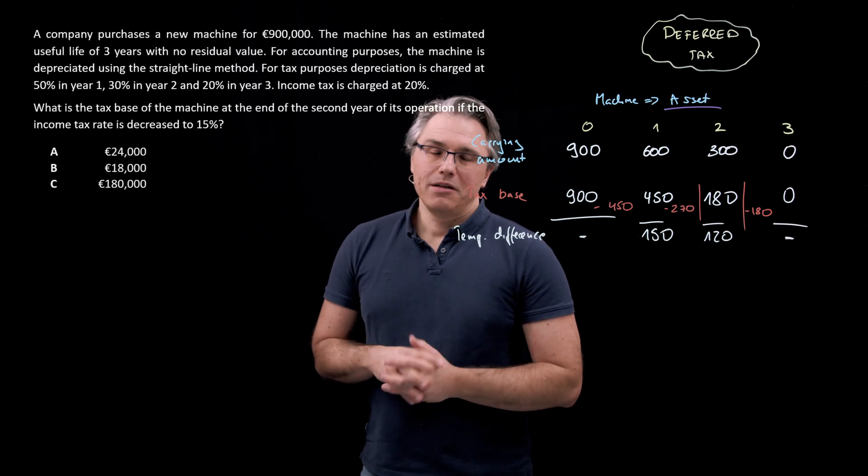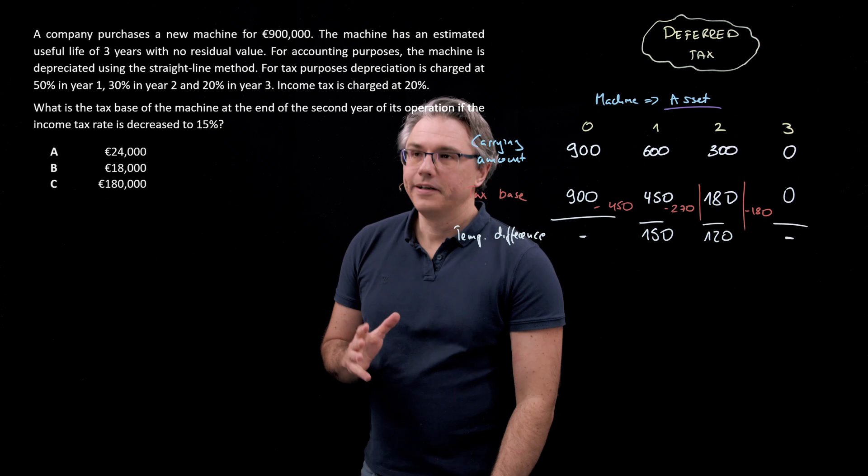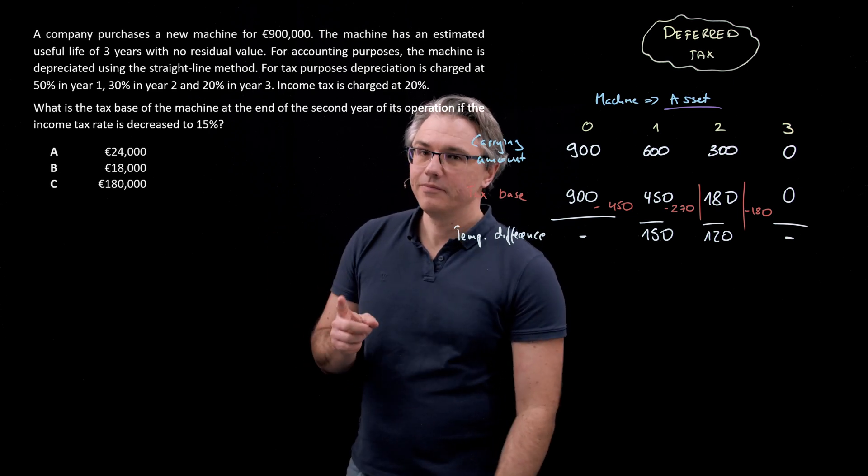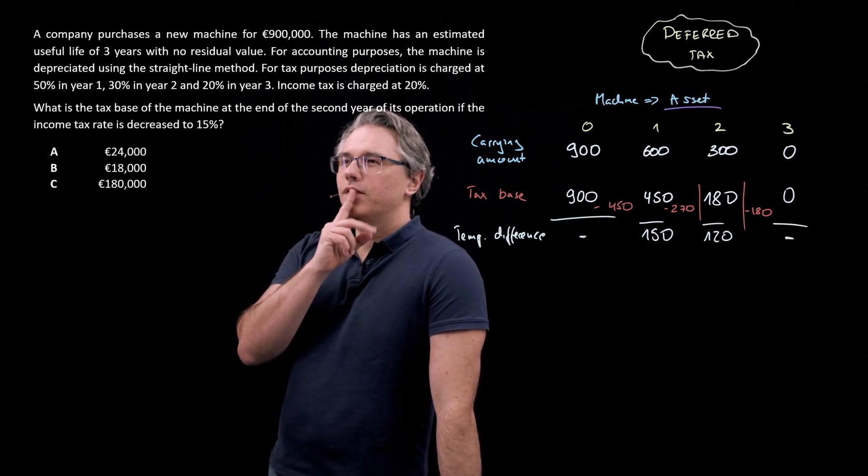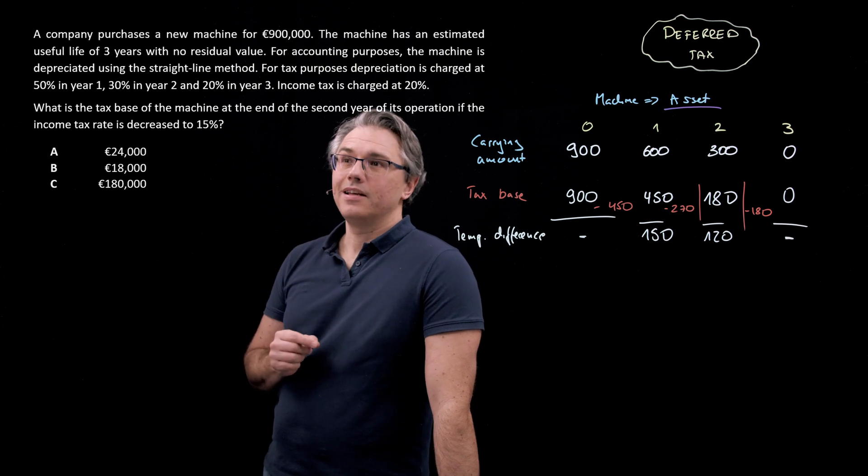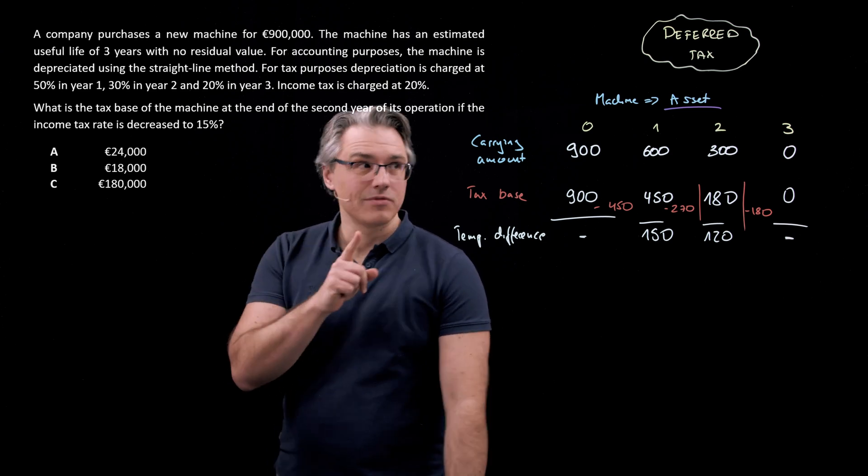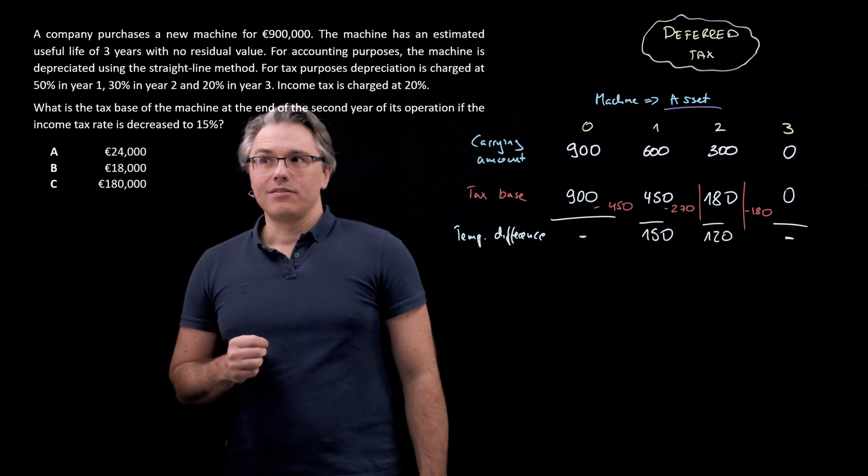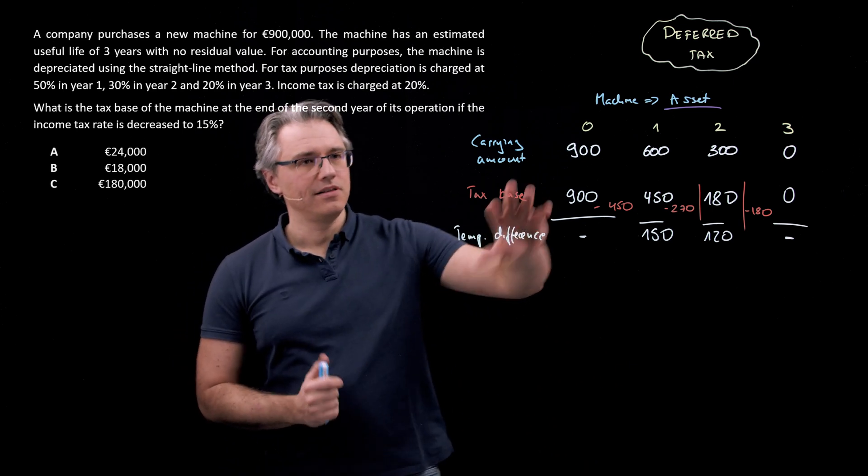This is the same scenario that we had in a previous question, so there is nothing here that would surprise us if you watched the previous video. However, there is one difference. What is the tax base of the machine at the end of the second year of its operations if the income tax at the end of the second year is decreased to 15 percent?